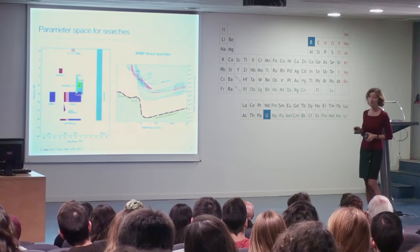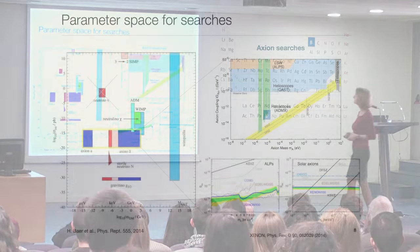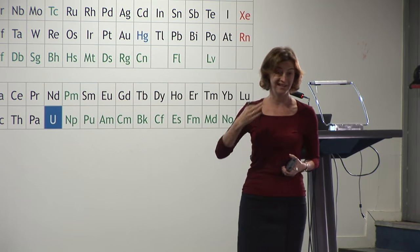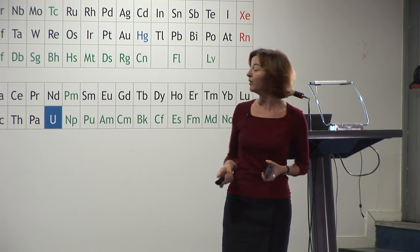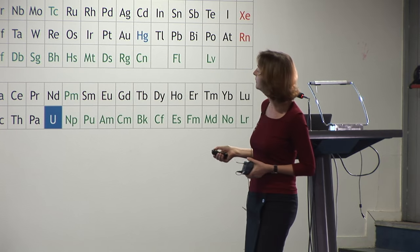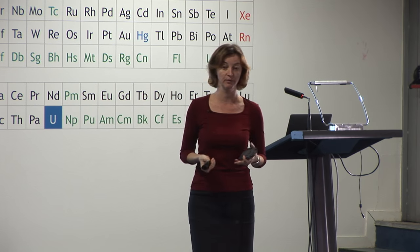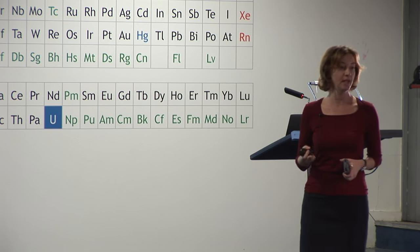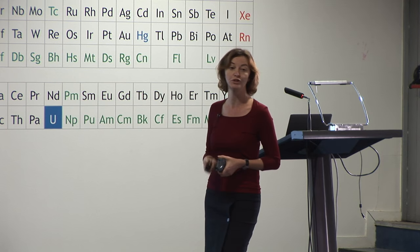I would also like to mention that this parameter space is also being searched with axion searches. We have the axion dark matter experiment that will cover a relevant part of the parameter space for the standard QCD axion. And then there are other searches looking for axion-like particles, such as light-shining-through-wall experiments, or helioscopes like the CAST helioscope at CERN, looking for axions coming from the sun. The experiments I will talk about today are also starting to set constraints on axion-like particles and solar axions.